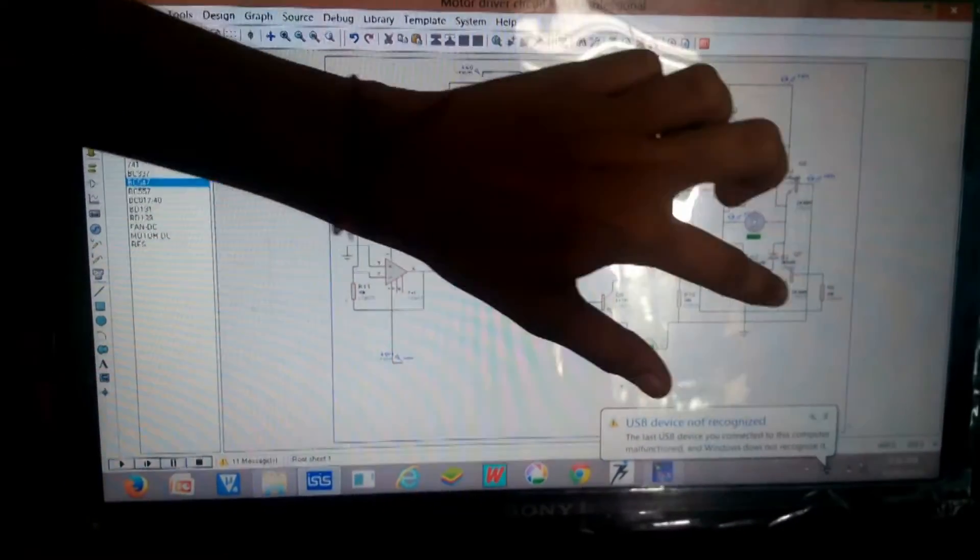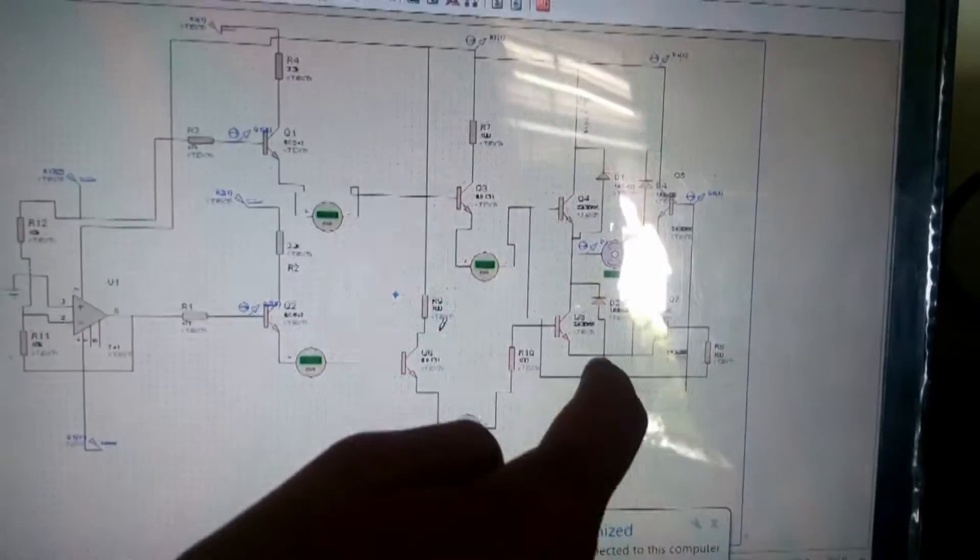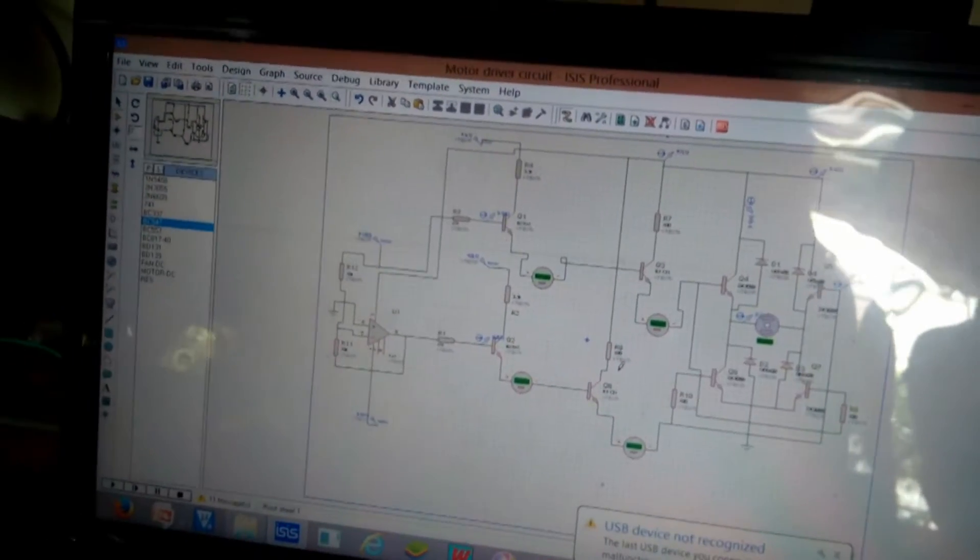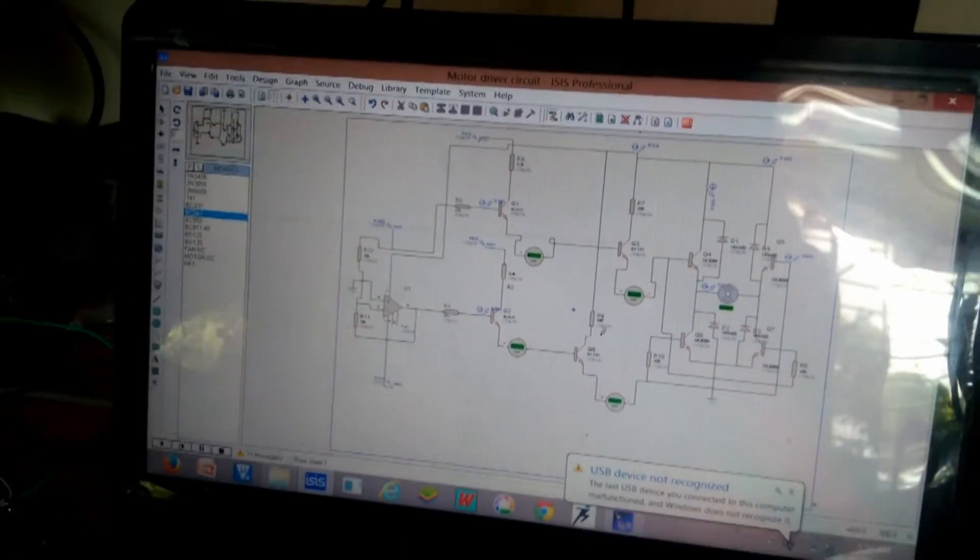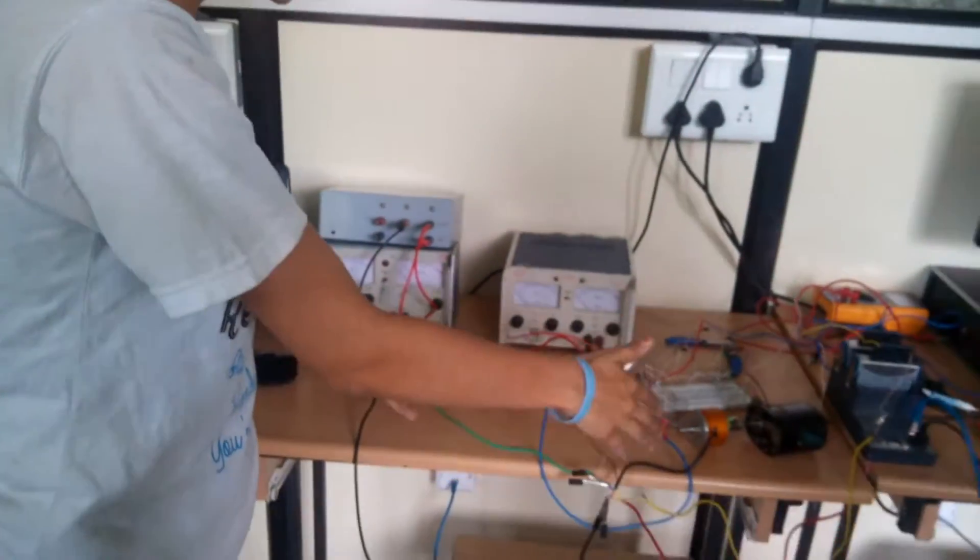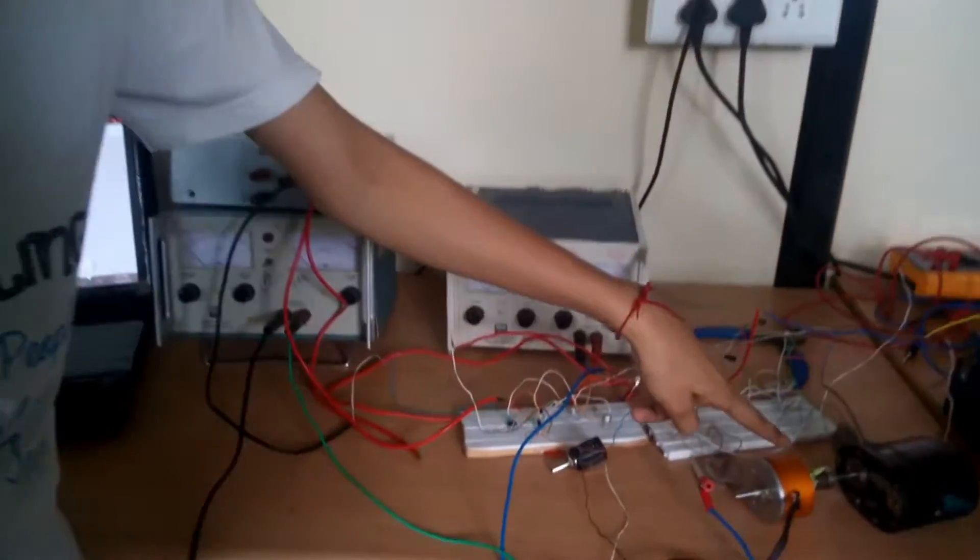And there are both 2N3055 power transistors. We have connected it accordingly. It is H-bridge diode circuit. It is for the rotation of motor in both the direction. So we can now see the simulation here. We have done this hardware.